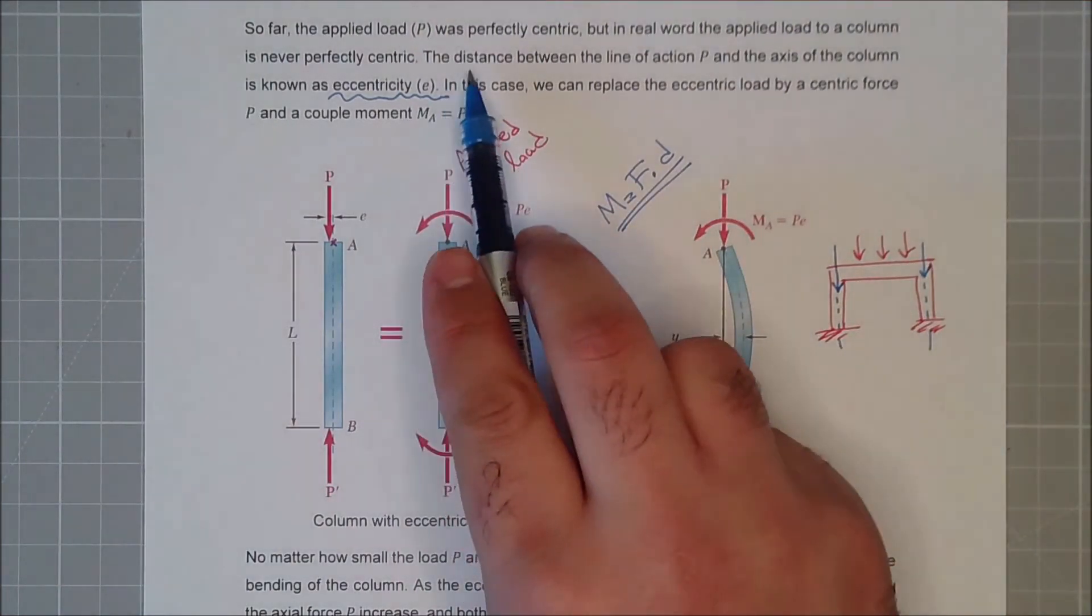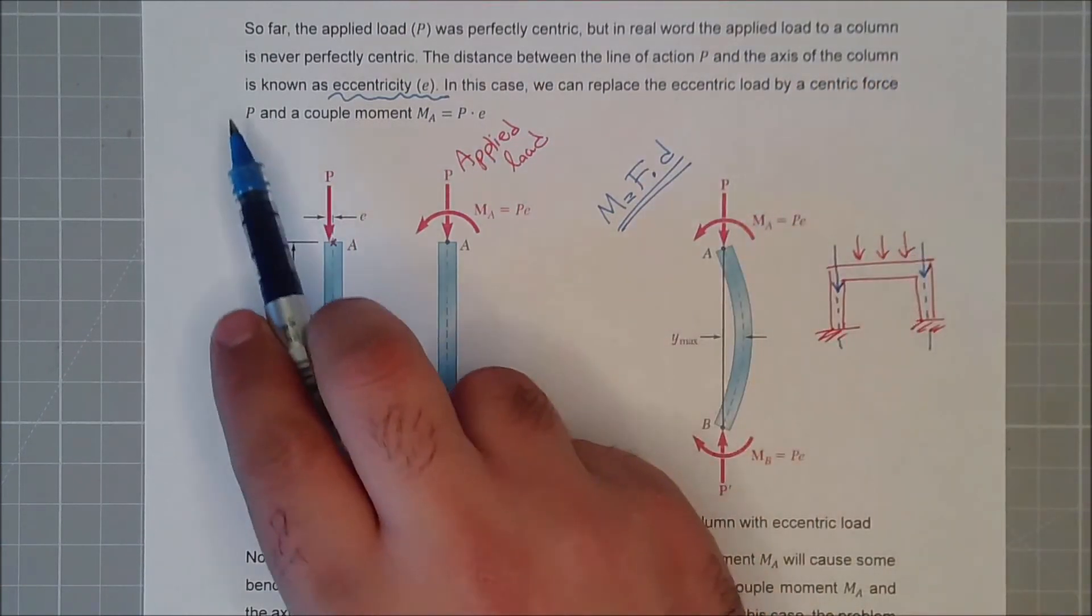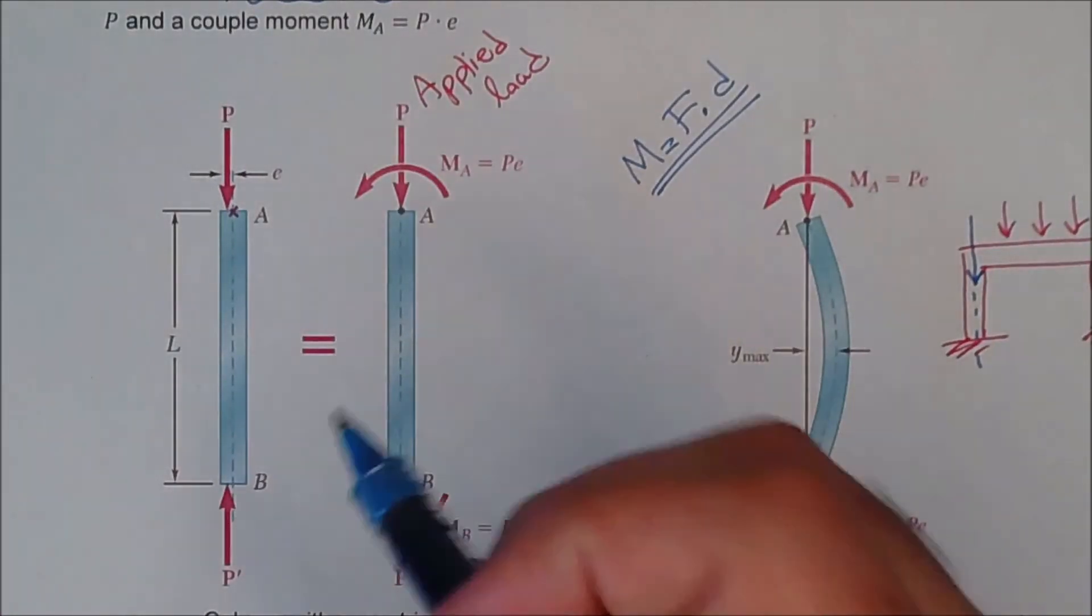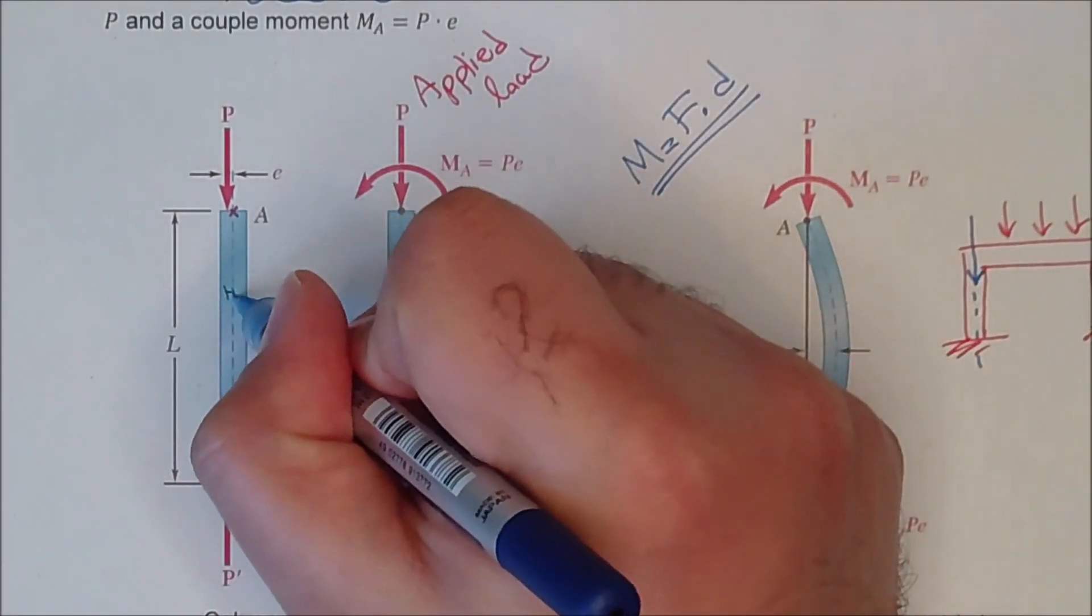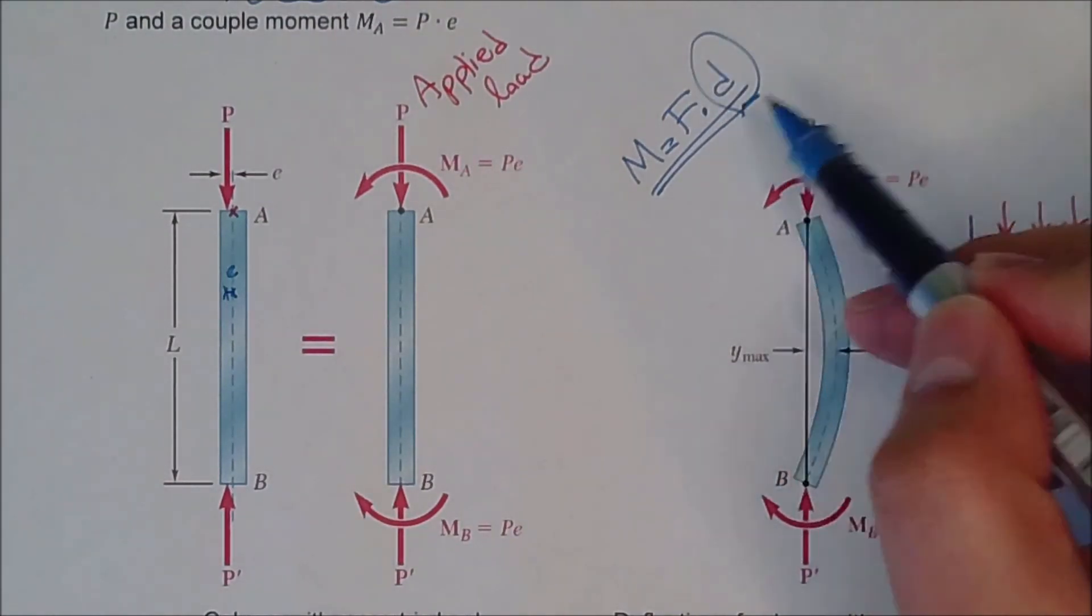So the distance between the line of action P and the axis of the column is known as eccentricity. It's extremely small, so it's hard to see. But this distance, this small distance is e, which acts like a perpendicular distance.